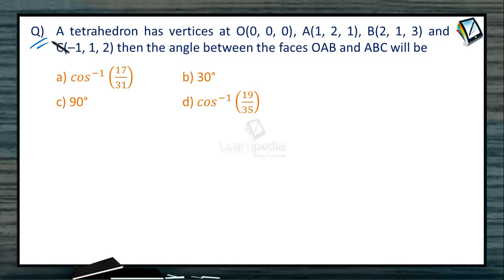A tetrahedron has vertices at origin O(0,0,0), A(1,2,1), B(2,1,3), and C(-1,1,2). Then the angle between the faces OAB and ABC.